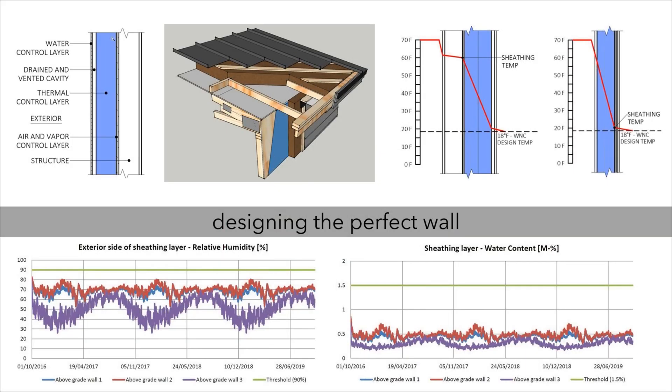I mentioned control layers. In the upper left there, you see we have four primary control layers: water, air, vapor, and heat. In this assembly, everything is to the outside of the structure, and this is our preferred way of designing and building.